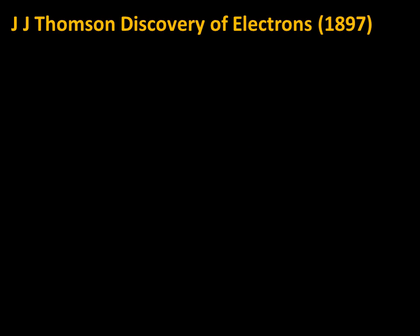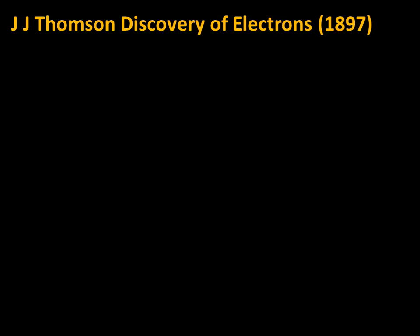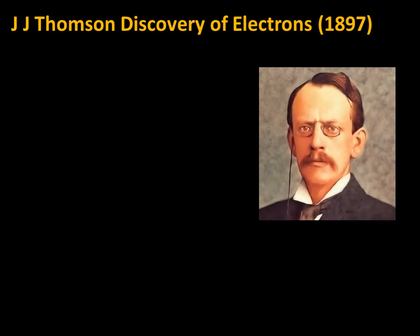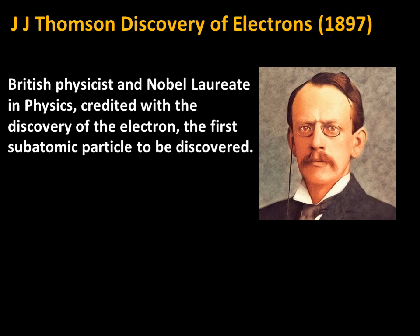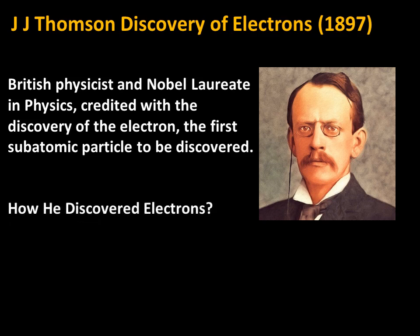In 1897, J.J. Thomson, a British physicist and Nobel laureate in physics, is credited with the discovery of electrons — the first subatomic particle to be discovered. The question is: how did he discover electrons?